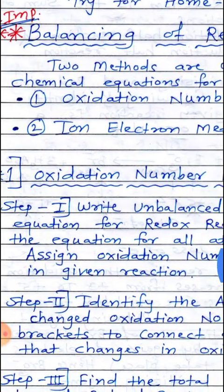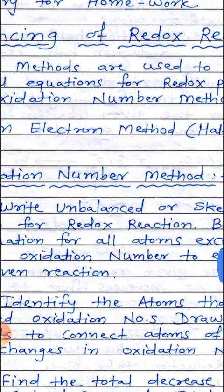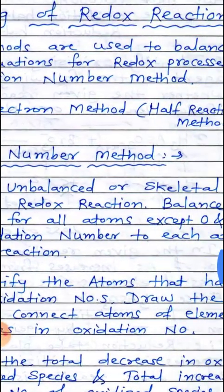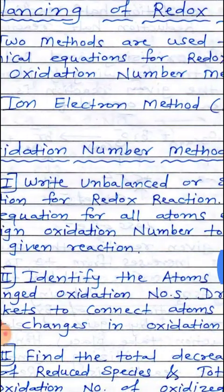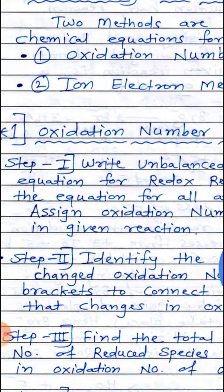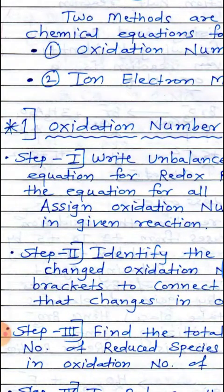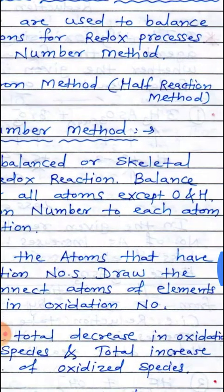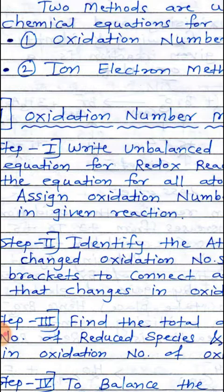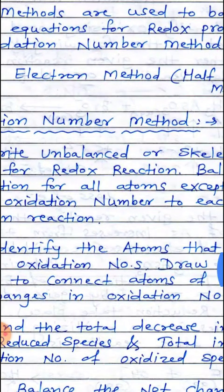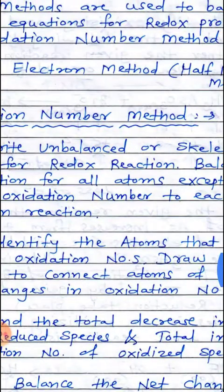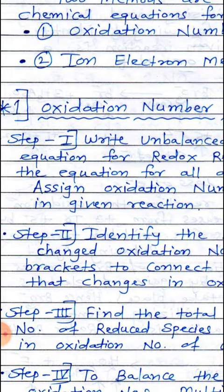The next very important topic is balancing of redox reactions. There are two methods used to balance chemical equations for redox reactions. The first is the oxidation number method and the second is the ion electron method, also known as the half reaction method. However, due to the COVID-19 pandemic situation, the ion electron method is not in the syllabus this year, so we have to study only the oxidation number method. We will see that in the next video. Thank you.